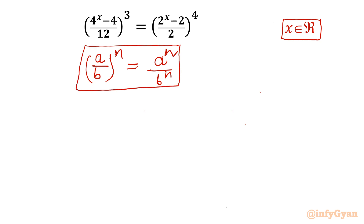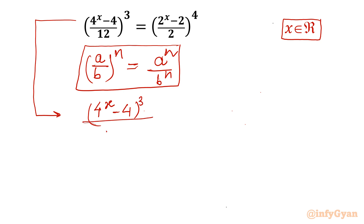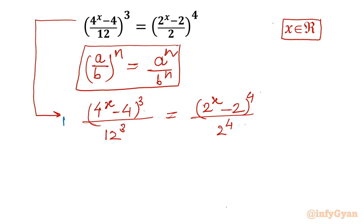Applying this, our equation becomes (4^x - 4)^3 divided by 12^3 on the left-hand side, and (2^x - 2)^4 divided by 2^4 on the right-hand side. Now I can multiply both sides by 12 cubed, so the 12^3 on the left cancels out.